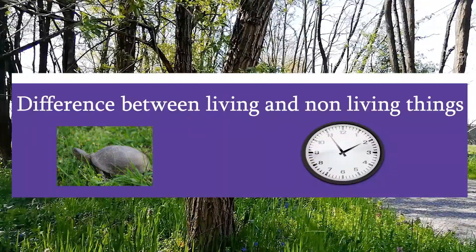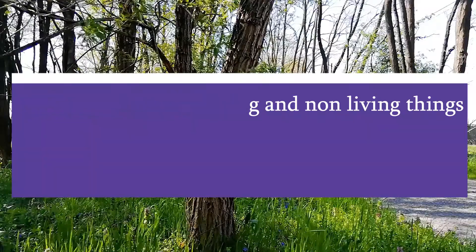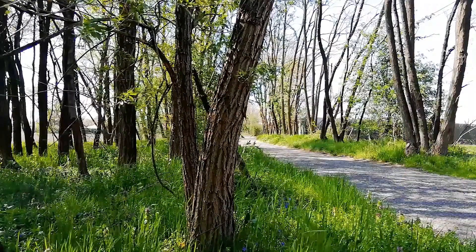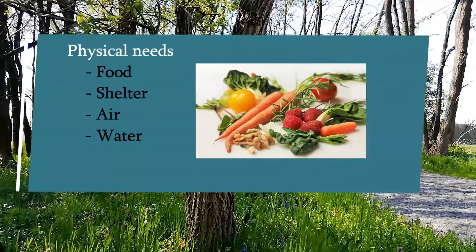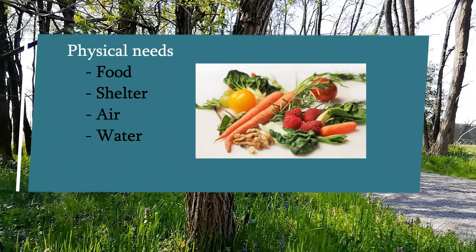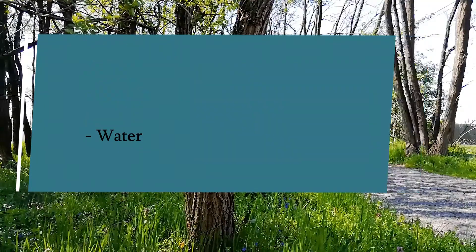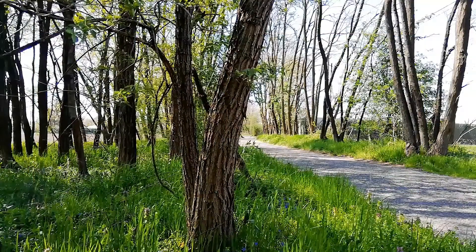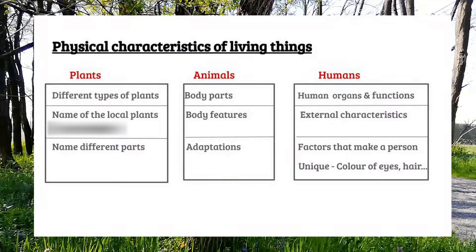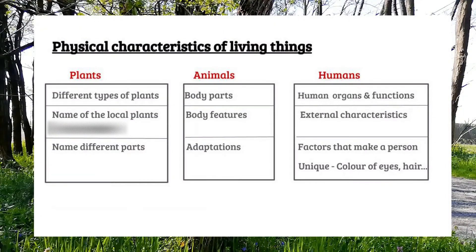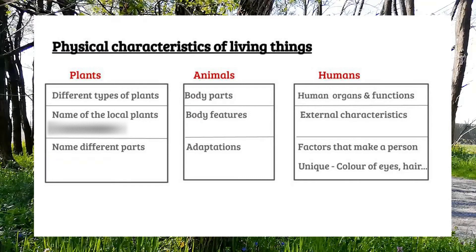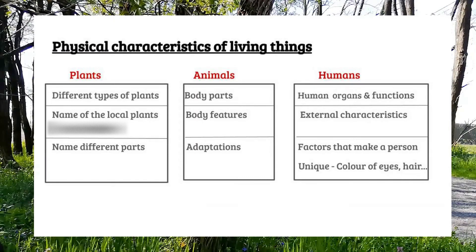The study of this unit helps a child to distinguish between living and non-living things. They also learn that living things, including humans, have physical needs that must be met to ensure their survival. They learn about the physical characteristics of living things and start using the term 'environment,' learning the importance of a healthy environment for a better life.